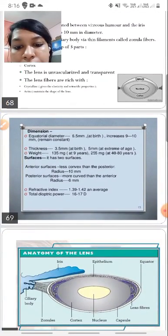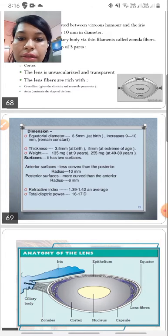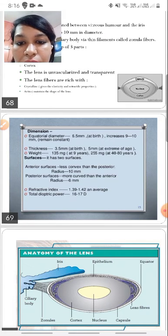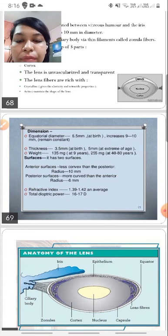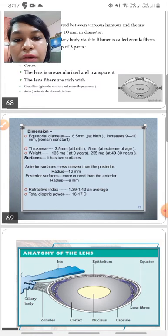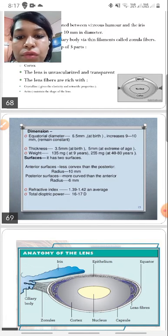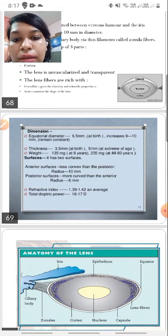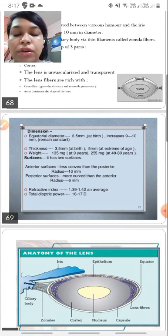The lens fibers are rich in a protein known as crystalline and actin. It has got two surfaces. It is a biconvex structure having two surfaces. The anterior surface, which is less convex than the posterior, has a radius of curvature of 10 mm, while the posterior surface has got a more curved configuration, the radius of curvature being 6. The refractive index is 1.39 to 1.42. The total diopter power is 16 to 17 diopters, which can be said is approximately 20 diopters.